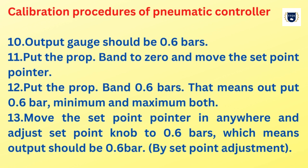Put the proportional band to 0 and move the set point pointer. The output should read 0.6 bars — meaning output is 0.6 bar at both minimum and maximum. Move the set point pointer in any direction and adjust the set point knob to 0.6 bars, which means output should be 0.6 bar by set point adjustment.